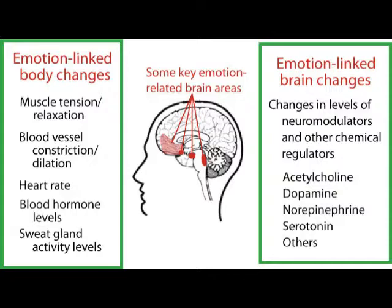On the brain side, they include changing levels of neuromodulators and other chemical regulators that help to determine the brain's level and style of activity. The status of the body, as well as the status of the brain itself, is closely monitored by the brain, and when a particular cluster of changes happens, it is interpreted by the brain as signaling the presence of some specific emotion. As a result, you feel afraid, or happy, or sad, or whatever the particular emotion is.